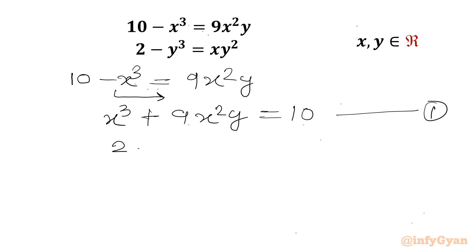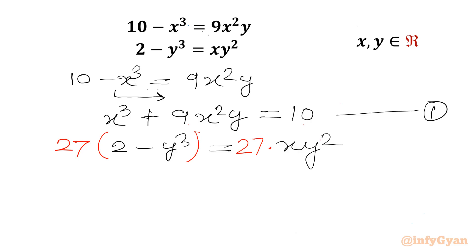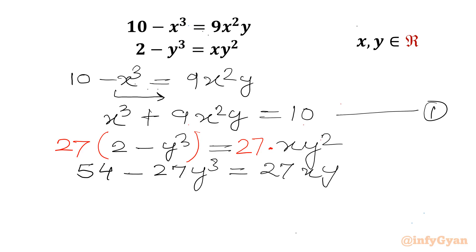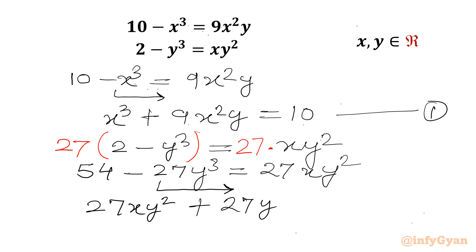Now we write our second equation: 2 minus y³ equals xy². We will multiply both sides by 27, giving 54 minus 27y³ equals 27xy². Taking the negative term to the RHS, we get 27xy² plus 27y³ equals 54. This we will call equation 2.